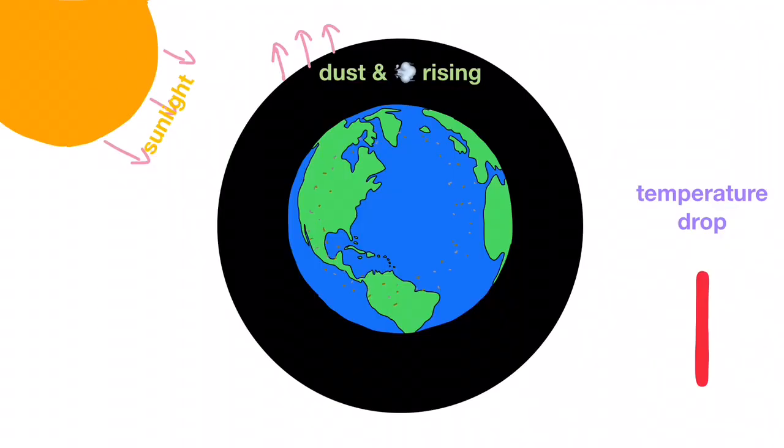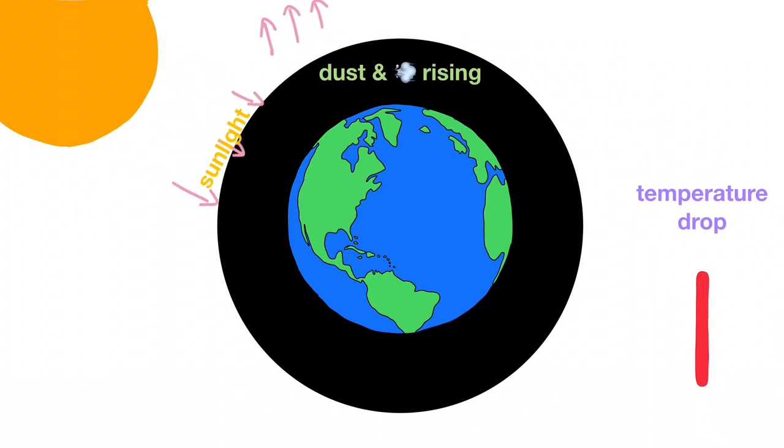Second, with an asteroid hitting the Earth, dust and smoke rising in the atmosphere prevent sunlight from reaching our world and cause the temperature to drop.